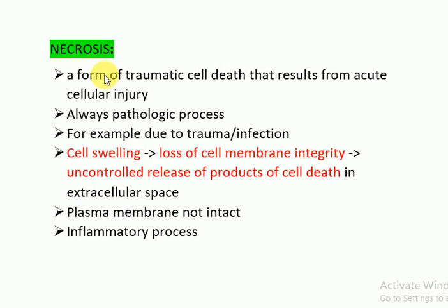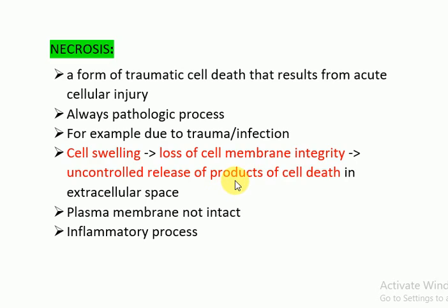Necrosis is a form of traumatic cell death that results from acute cellular injury. It is always a pathologic process — it never occurs physiologically. For example, it may be due to trauma or infection. First there is cell swelling, then loss of cell membrane integrity, and then an uncontrolled release of products of cell death into the extracellular space, which causes the inflammatory process. The plasma membrane is also not intact.